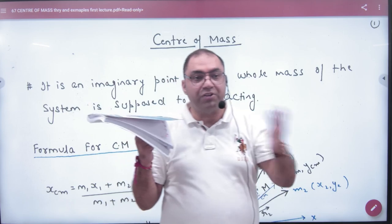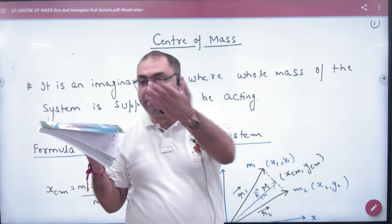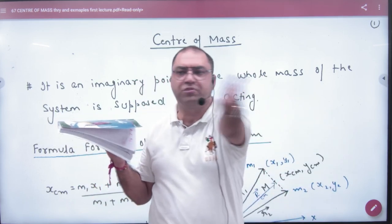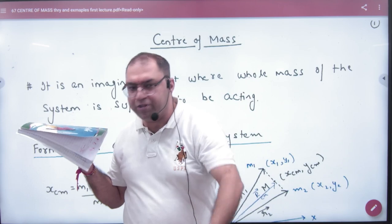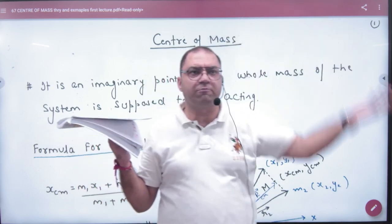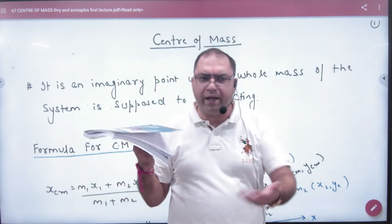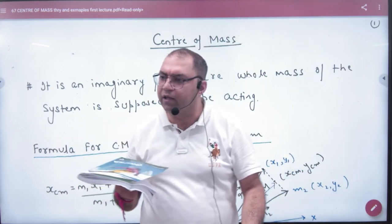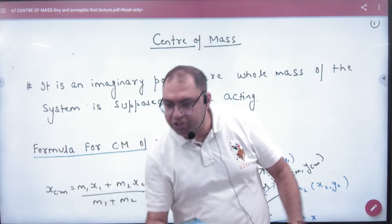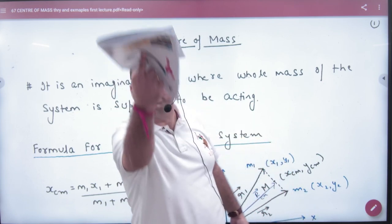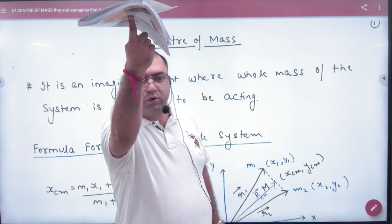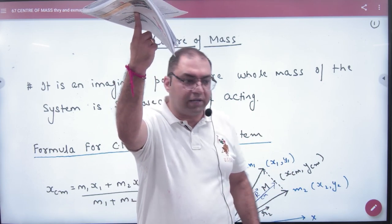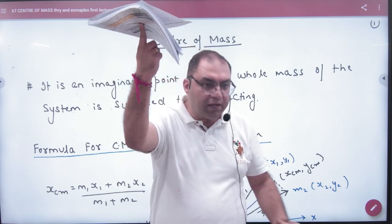Imagine that this is a room. There are many people in the room — M1, M2, M3, Mn — bench, fan, everything. Imagine there is a hole in the room floor; we are all sitting here on the first floor. Where will it balance? From the center of mass.